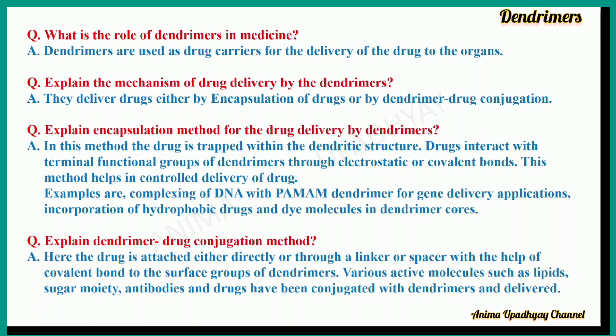Explain the encapsulation method for drug delivery by dendrimers. In this method, the drug is trapped within the dendritic structure. The drugs interact with the terminal functional groups of dendrimers through electrostatic or covalent bonds, and this method helps in controlled delivery of drugs. For example, complexing of DNA with PAMAM dendrimer for gene delivery applications, and incorporation of hydrophobic drugs in dye molecules in dendrimer cores.